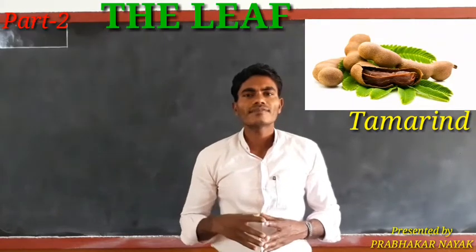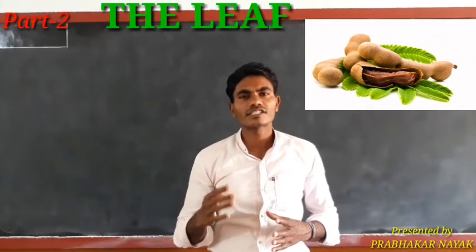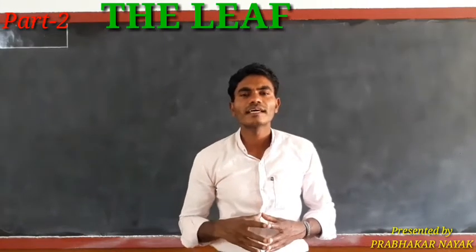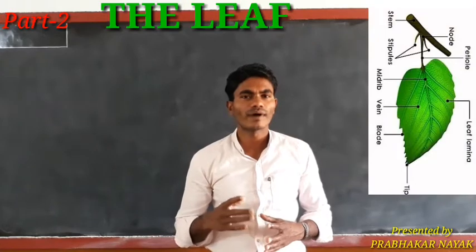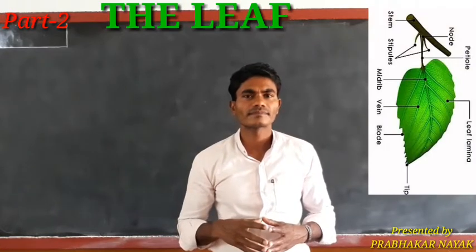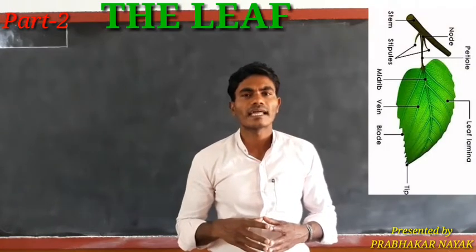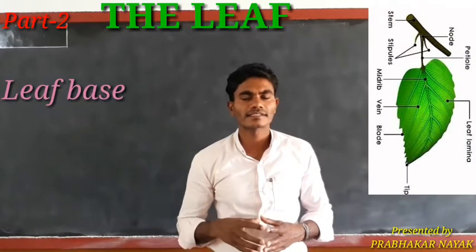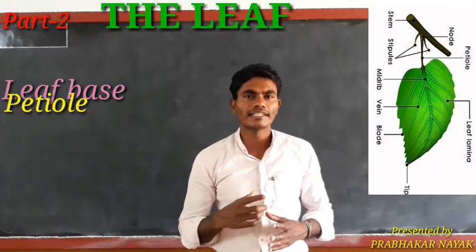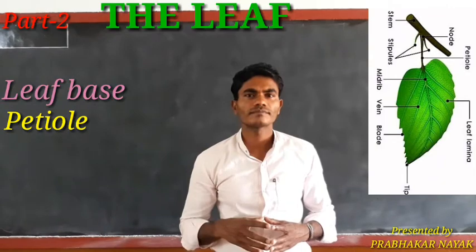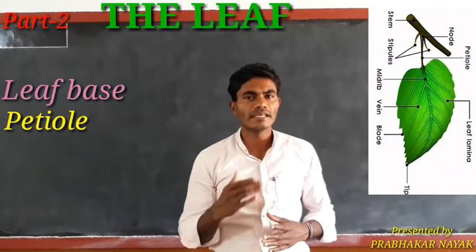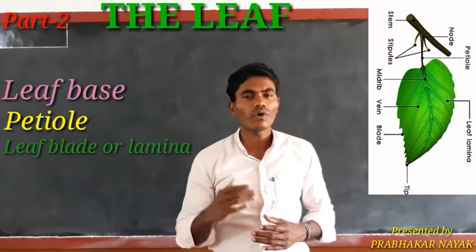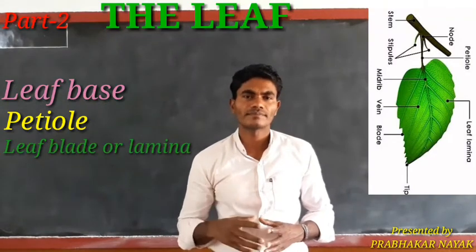A leaf type consists of three parts: one is the leaf base, petiole, and the leaf blade or lamina.